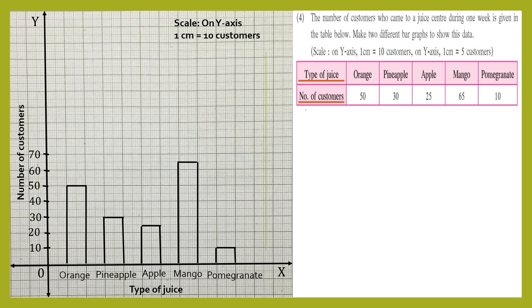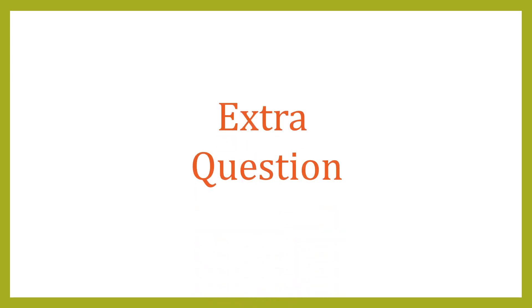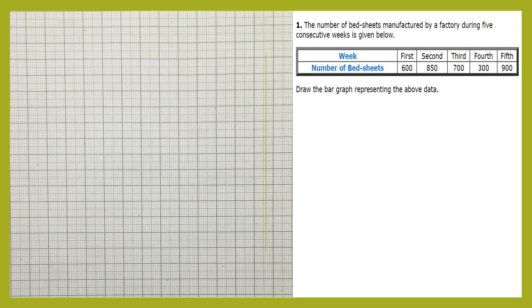Now let's take up an extra question on drawing a bar graph. The question is: the number of bed sheets manufactured by a factory during five consecutive weeks is given below. First week: 600 bed sheets. Second week: 850. Third week: 700. Fourth week: 300. Fifth week: 900. We are supposed to represent this data with the help of a bar graph. The scale is not given.